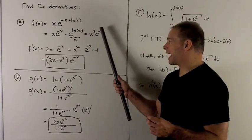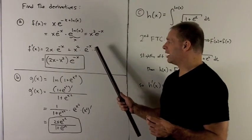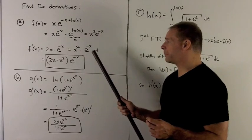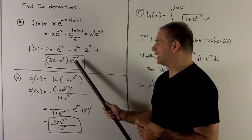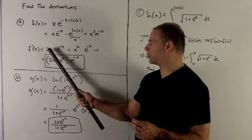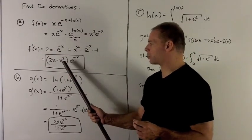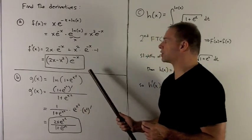So I rewrite this as e to the minus x, and then I multiply by the derivative on the top. That's going to be minus 1. So I can factor out an e to the minus x out of everything, and that leaves me with 2x minus x squared. And so that's my answer.